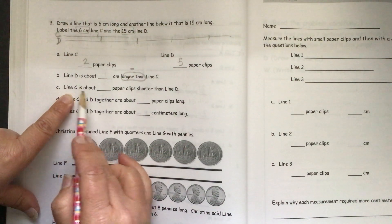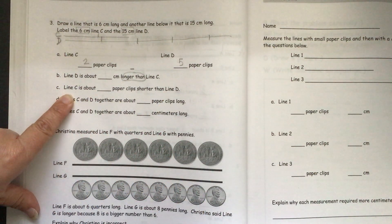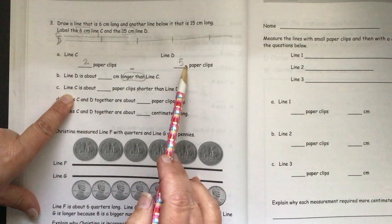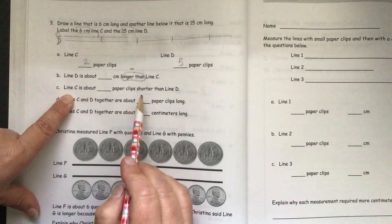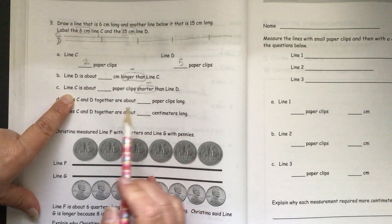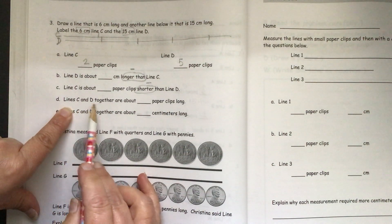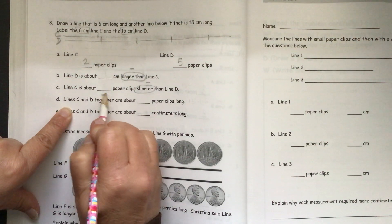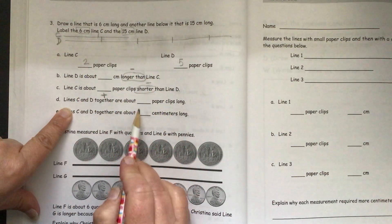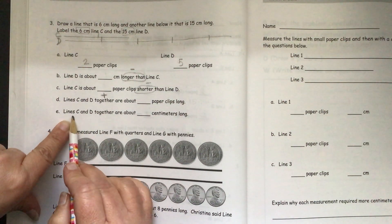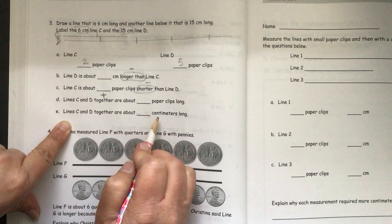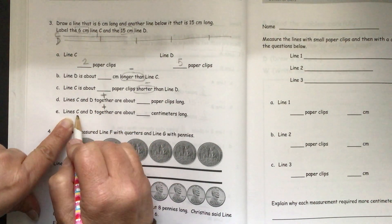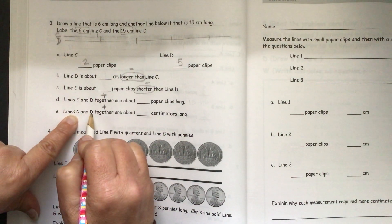Then we have line C is about blank paper clips shorter than line D. So line C is two paper clips. Line D is five paper clips. So five minus two for this one. So that's shorter than is going to tell us subtract. Line C and D together are about blank paper clips long. So together means you're going to add the number of paper clips for that. Line C and D together are about blank centimeters long. So remember, together we're going to add. So then it'll be 15 plus 6.